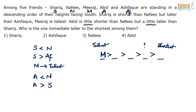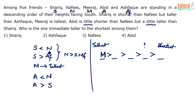If we converge the first two clues, we get: S less than N, and S greater than AF — so N greater than S greater than AF. That's the three-person sequence: N, S, AF. And from the Abid clue, we get N greater than A greater than S.